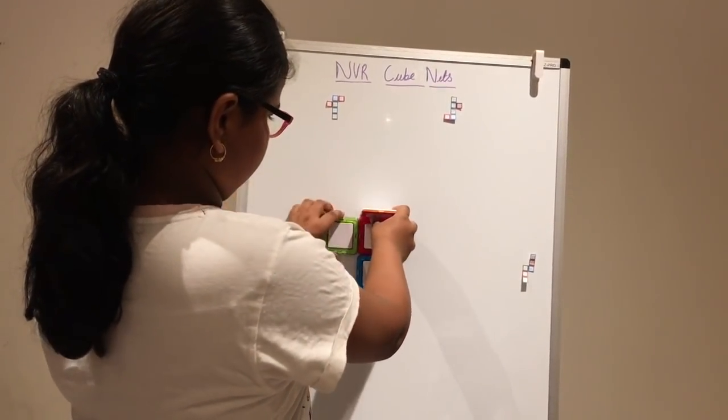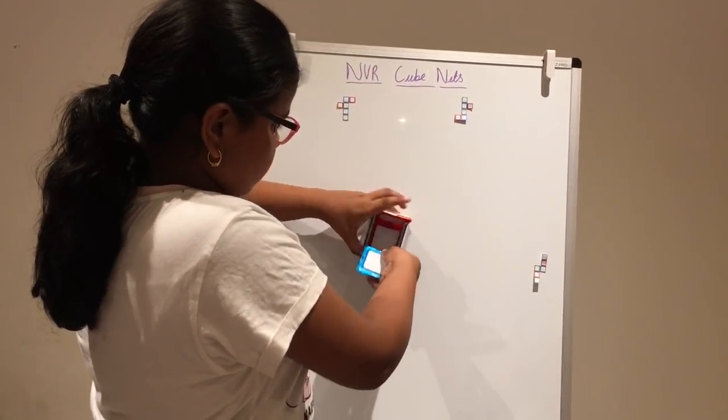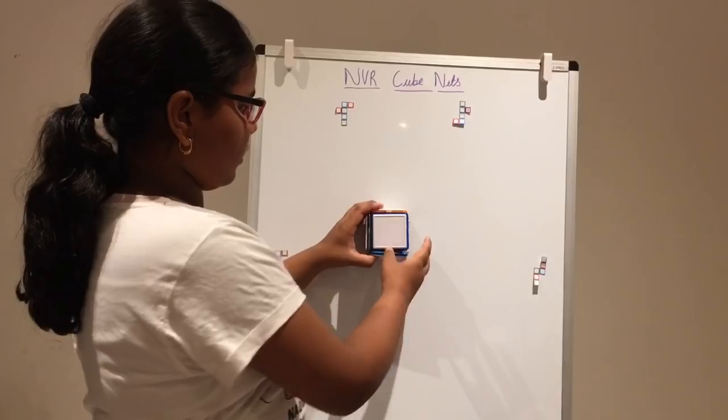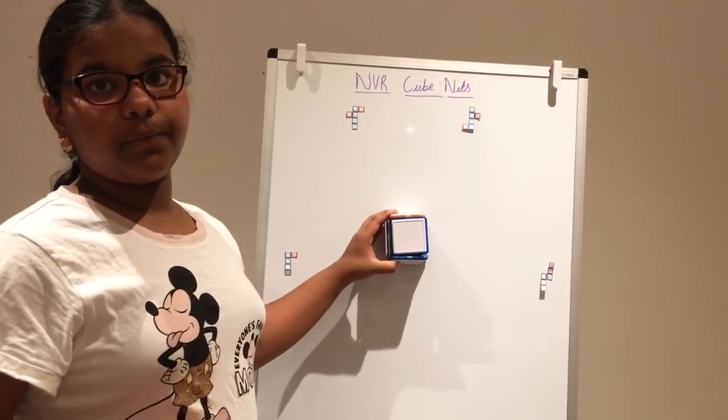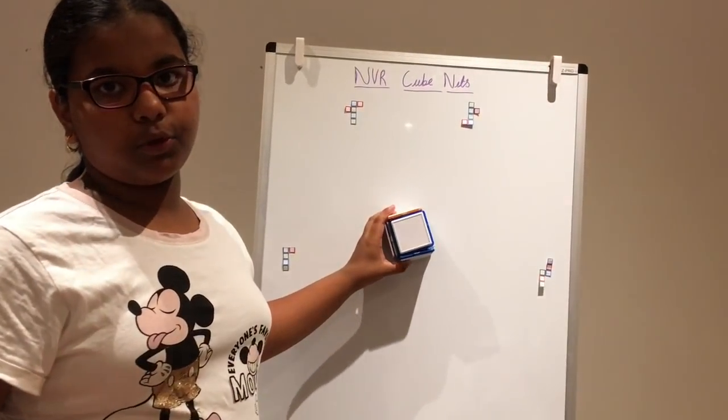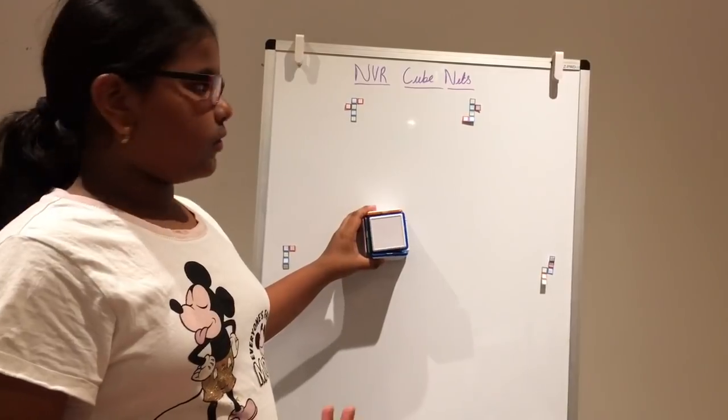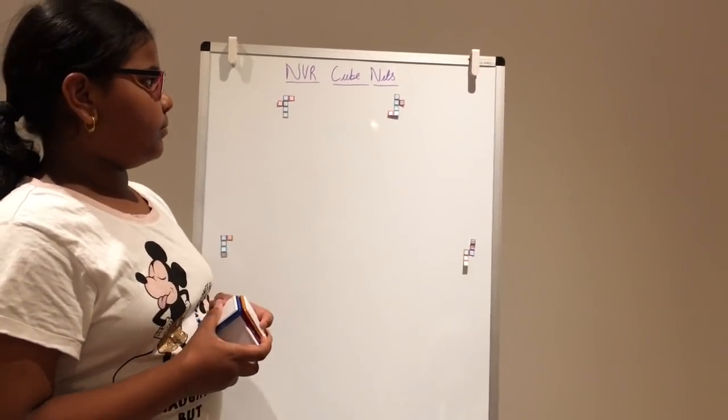Then, now, there, there, one up, and there. Now, that cubenet has made a cube. So, that cubenet can be shown in some non-verbal reasoning questions to trick you. Now, let's see the second example.